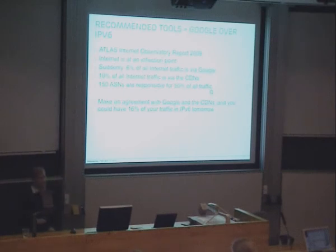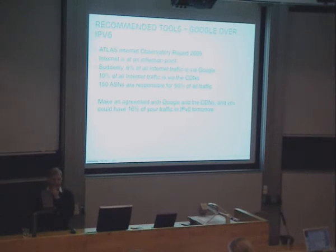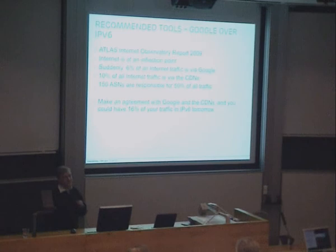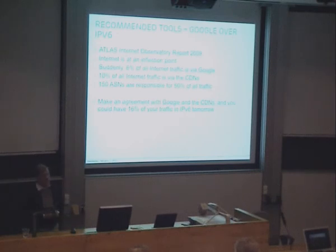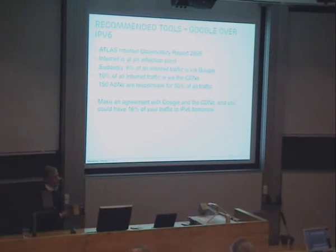As an example, Google over IPv6 was a use case we examined, making observations based on the Atlas Internet Observatory report 2009. Google itself represents 6% of all internet traffic. So getting Google services on IPv6 into your network — where all these terminals are IPv6 capable — means 6% of your traffic moves to IPv6. That's a major impact on your NATs. Think about how many NATs you can actually reduce just by simply making a deal with Google for IPv6 connectivity.